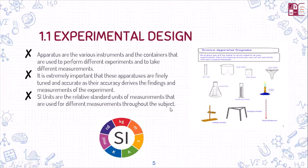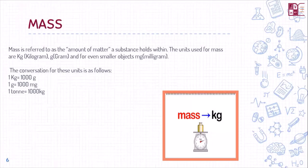As you can see in this picture, it is a representation of the basic apparatuses commonly used: the funnel, the Bunsen burner or gas burner, a test tube, a conical flask, a beaker, a measuring cylinder, a thermometer for measuring temperature, a tripod stand, and a clamp stand. Coming to the next slide, which discusses mass.